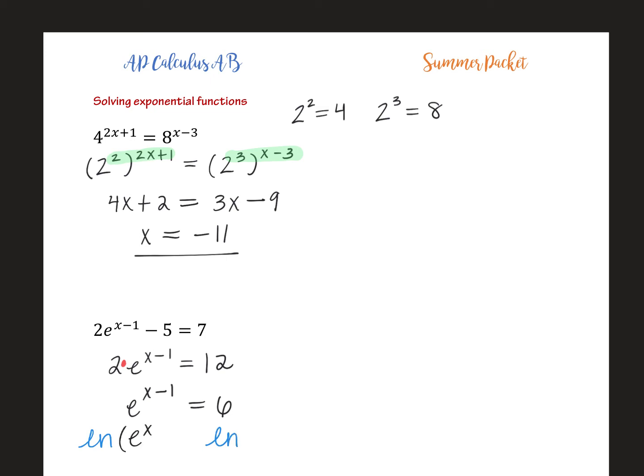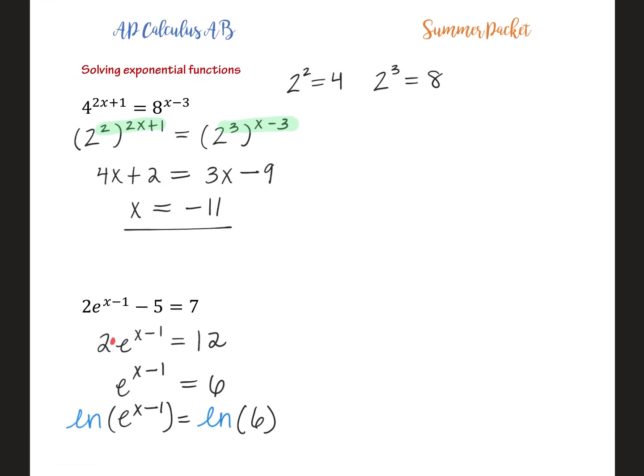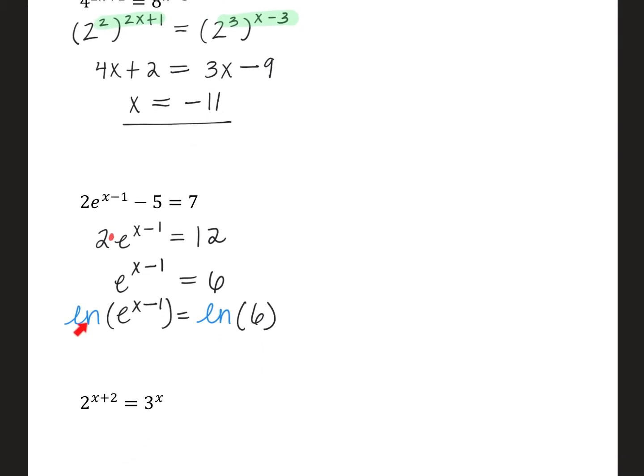So I have the natural log of E to the X minus one, and then the natural log of six. The reason we do that is because there's a property saying the natural log, which is really just a logarithm with a base of E. So log base E of E to the X minus one. Some teachers call this the log roll property. So this exponent comes down to become the coefficient.